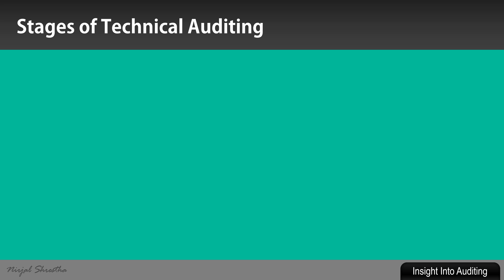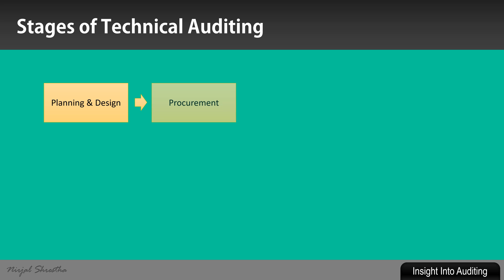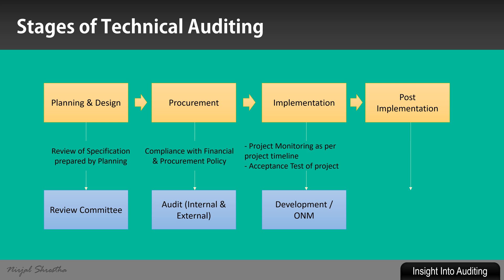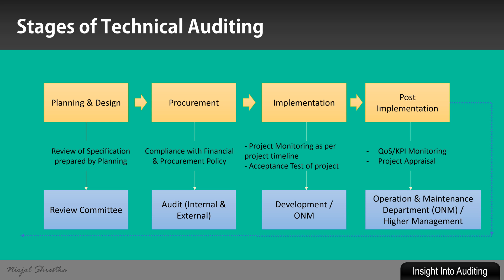Stages of technical auditing: as discussed, technical auditing is conducted primarily on four areas of a project — one, planning and design; two, procurement; three, implementation; and four, post-implementation — along with related internal review and control designed and implemented by management, and external audit.